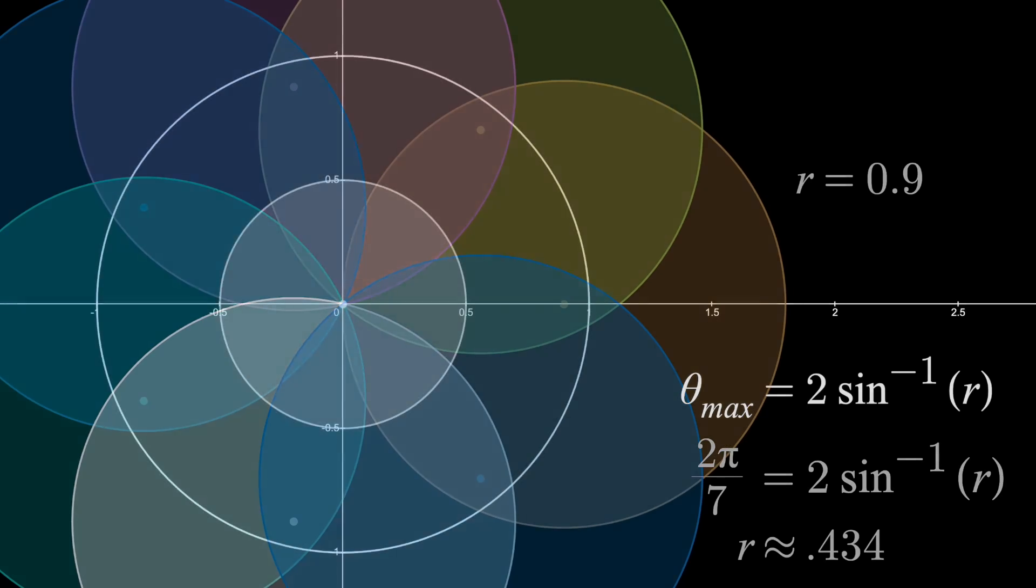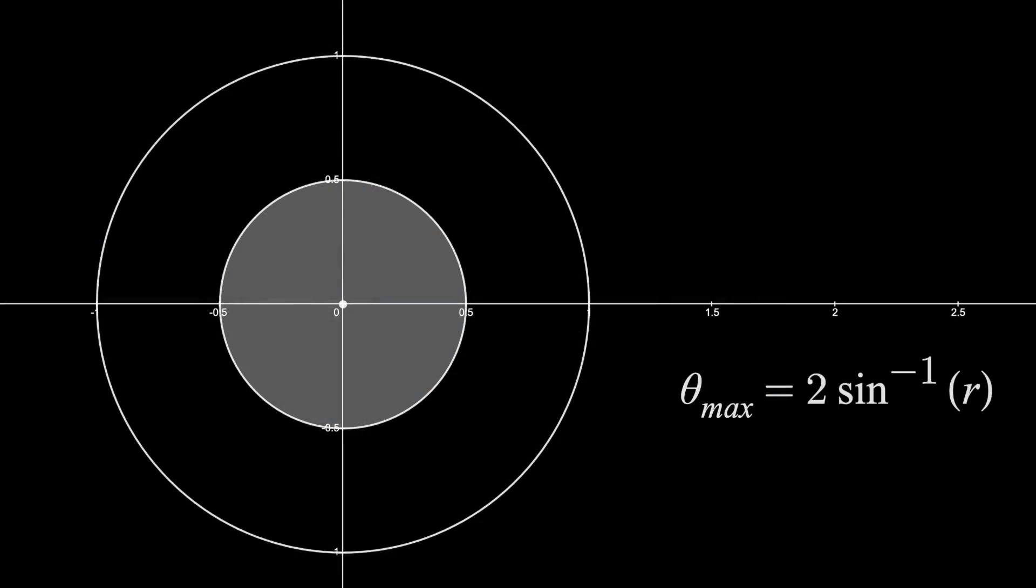So what we're going to do instead, is place one disk in the center, and then use the remaining 6 to cover the perimeter, as well as the rest of the interior. So using that same formula, but with 6 circles, means that the arc covered by each must be 2 pi over 6. So we find that r equals 0.5.